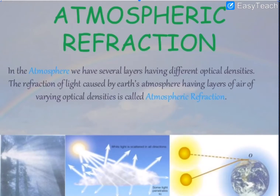In the last chapter on light, we studied refraction — the bending of light whenever there is a change in medium. Similarly, atmospheric refraction can be defined as the refraction of light caused by the Earth's atmosphere. In the atmosphere we have different layers, and in each layer we have different optical densities.